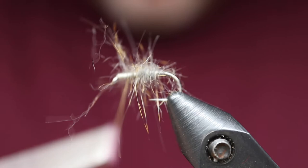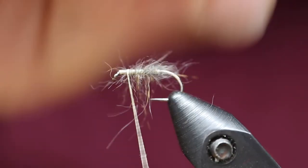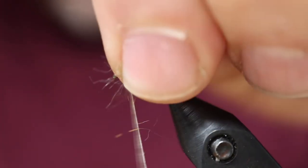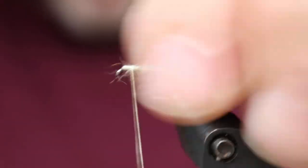And right now, that body of the fly looks really buggy and shaggy, but that dubbing, since it was very loosely on there, is not really on there tight, so you can pick out most of it.